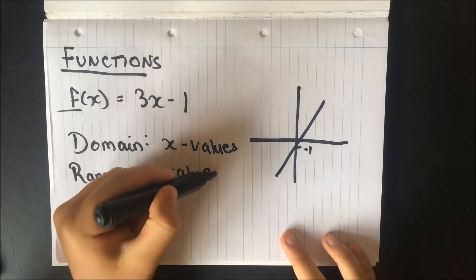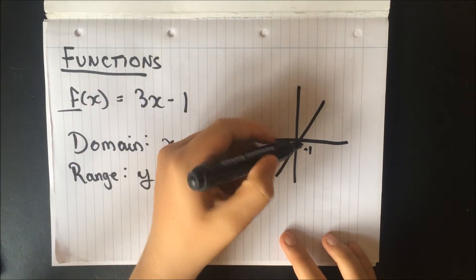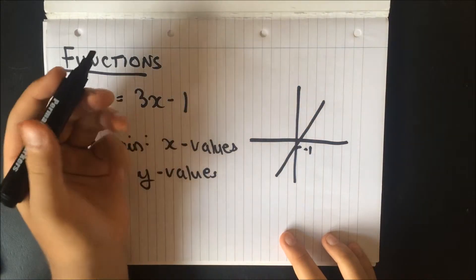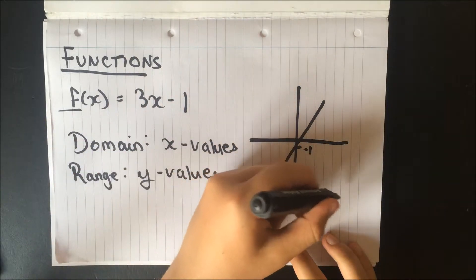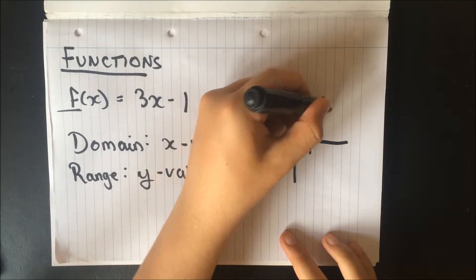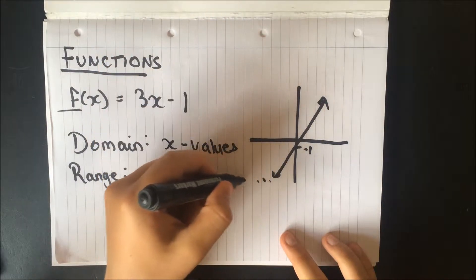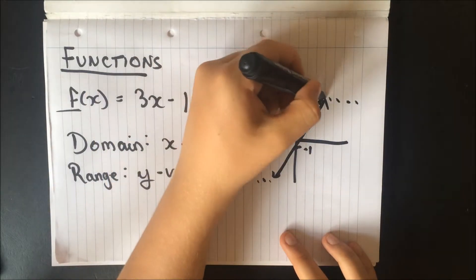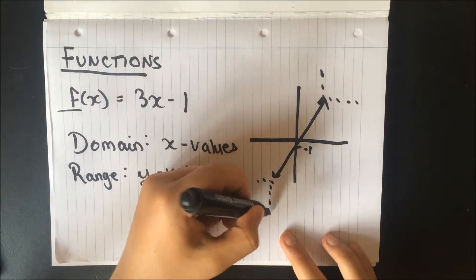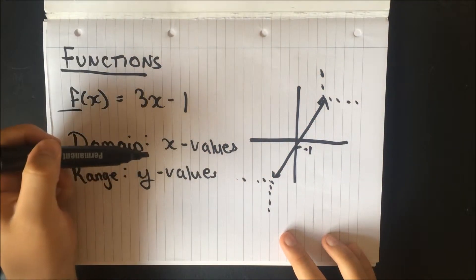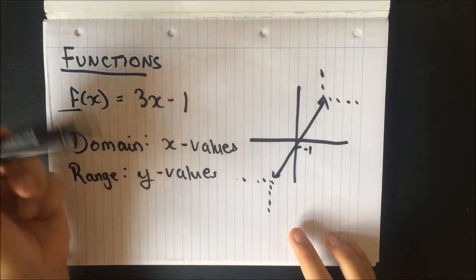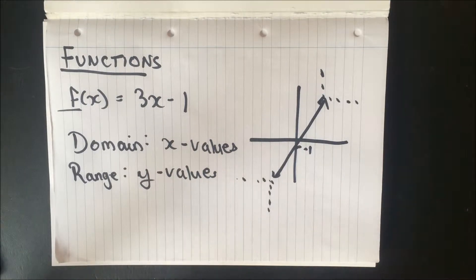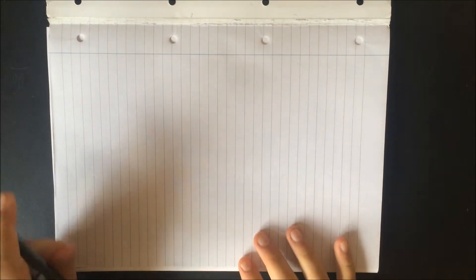Well basically domain is the x values and range is the y values. So you go back to our 3x - 1 example here and our domain, you can see it goes with any x values across here. It will continue down there and up there. So it will go across infinitely and it will also go up infinitely. So this isn't a great example but our domain is infinite and our range is also infinite.